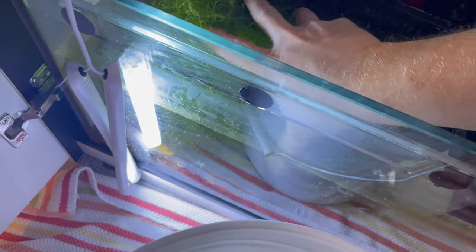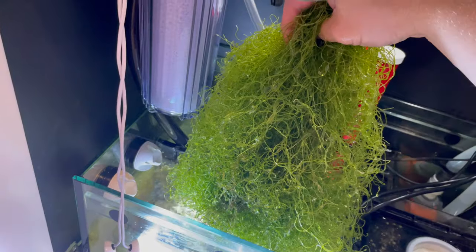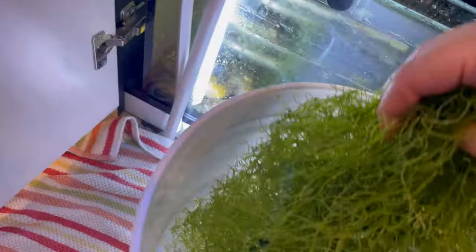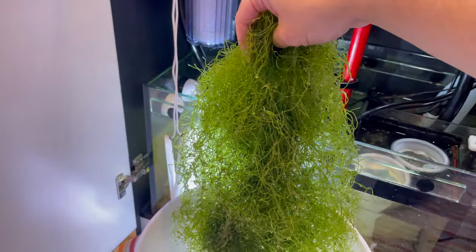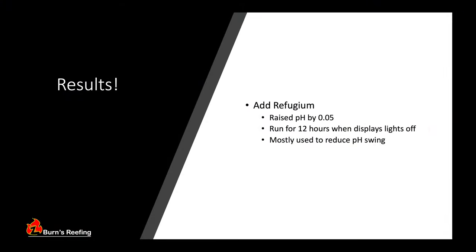So next up, I started growing macroalgae way more aggressively. My chaeto growth has exploded. However, this didn't have as much of an impact on pH as I had originally hoped. Adding the refugium on a reverse light cycle definitely increased my pH. I think it was about 0.05, which is okay. But perhaps of more significance, that reverse light cycle process was a great strategy at reducing my pH swings and kind of closing that gap between the peak and the low.